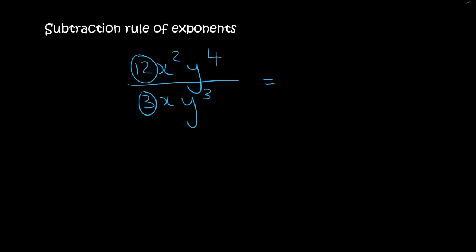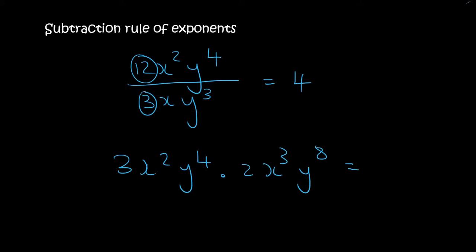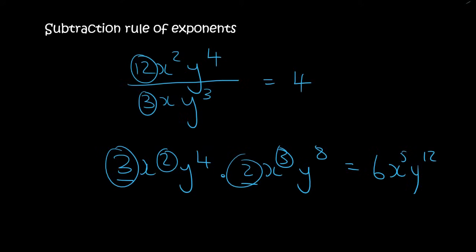Do the 12 and the 3 have exponents? No they don't, so you can treat them as normal numbers — 12 divided by 3 is 4. Remember: it's the exponents that must be subtracted, but numbers you treat normally. Just like when we did 3x²y⁴ times 2x³y⁸ — the 3 and the 2 don't have exponents so we multiplied them to get 6, and it's only the exponents that we added. If it's a normal number, treat it like a normal number; if it's an exponent, it has its own rules.